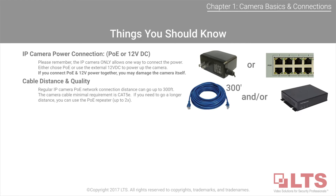Cable distance and quality: network connection distance for a regular IP camera through POE can reach up to 300 feet. The minimum requirement for the camera cable is Cat 5e. If the installation requires a longer distance, a POE repeater is needed to double the range.